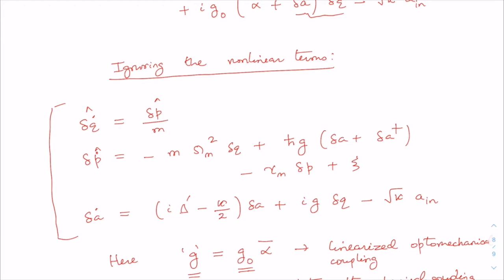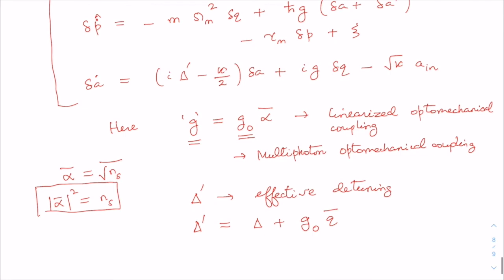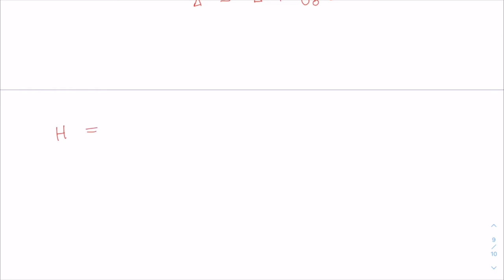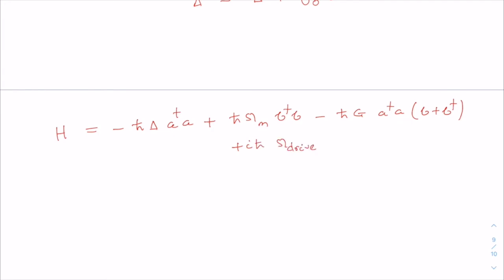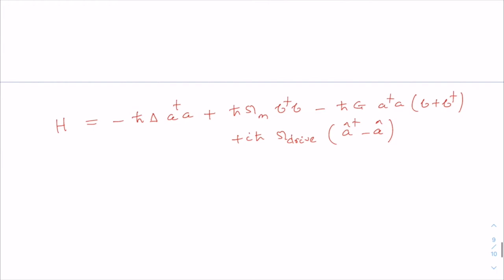This set of equations contains the full linear response of the system. These equations can also be derived entirely in terms of creation and annihilation operators, starting from the Hamiltonian written as: H = -ħΔa†a + ħω_m b†b - ħg·a†a(b + b†) + iħω_drive(a† - a).